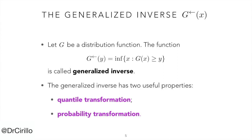The generalized inverse is an extension of the concept of inverse. It is a generalized quantile function. If a distribution function is strictly increasing and continuous, the generalized inverse coincides with the standard quantile function you are probably used to. For us, the most important properties of the generalized inverse are the quantile transformation and the probability transformation.